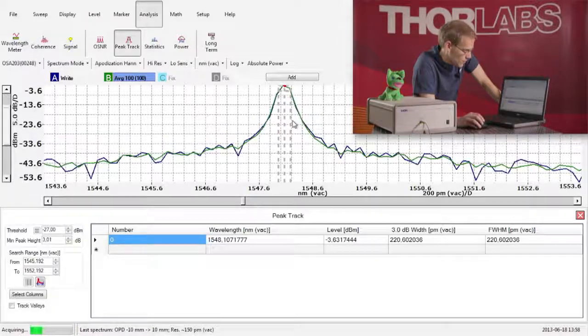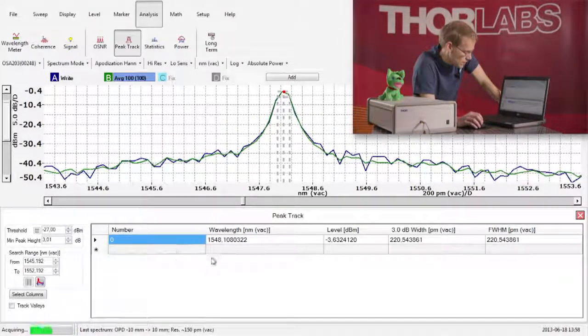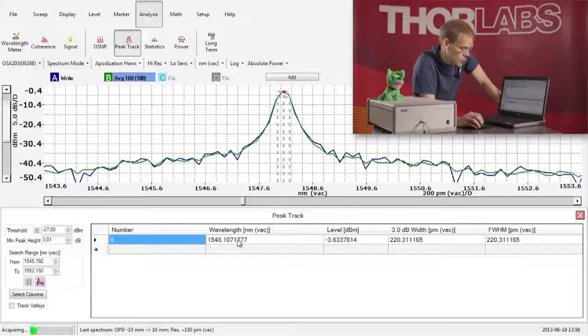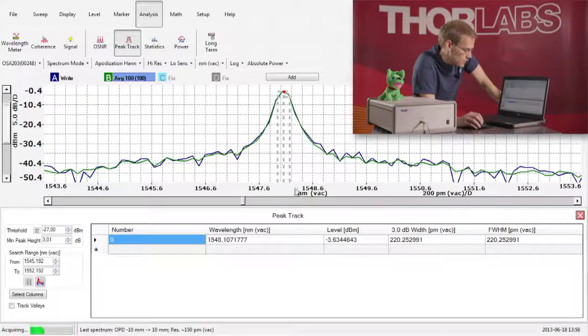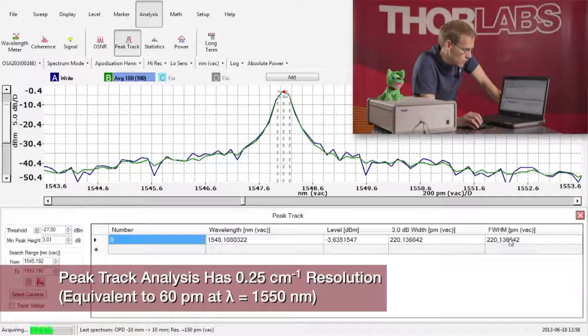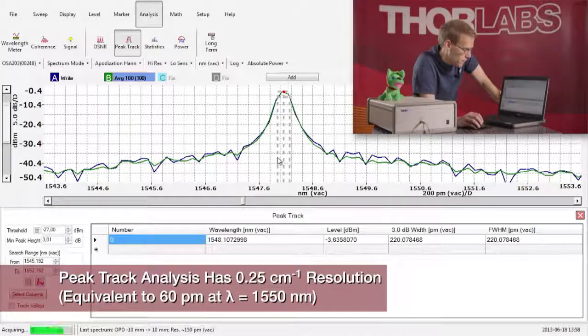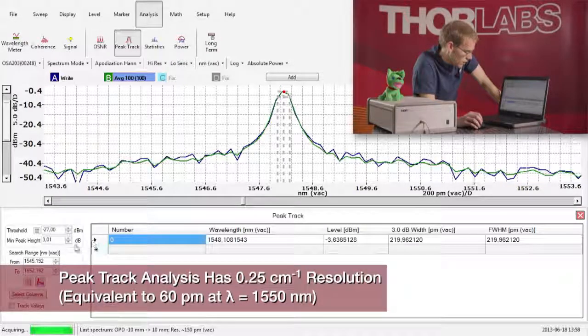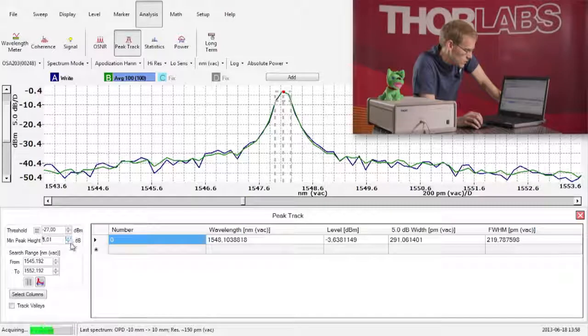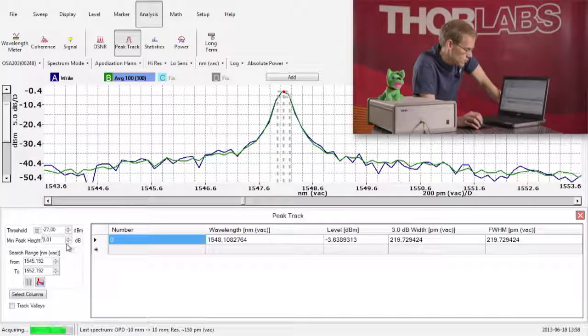Right now I've set everything up and you can see it tracks the peak. This is the center wavelength of the peak. You can see the full width half maximum of this peak and by changing the option we can also see the width of the peak at different locations.